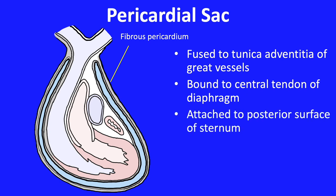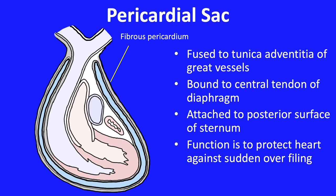The pericardium is also attached to the posterior surface of the sternum. The overall function of the pericardium is said to protect the heart against sudden overfilling, though this is only speculation. Reports exist of congenital absence of the pericardium, and after bypass surgery the pericardium is left open. Moving to the inside layer of the pericardium, we see that it consists of a serous pericardium — these layers exhibit the ability to secrete small amounts of fluid between them, allowing them to glide past one another and decreasing friction when the heart beats.